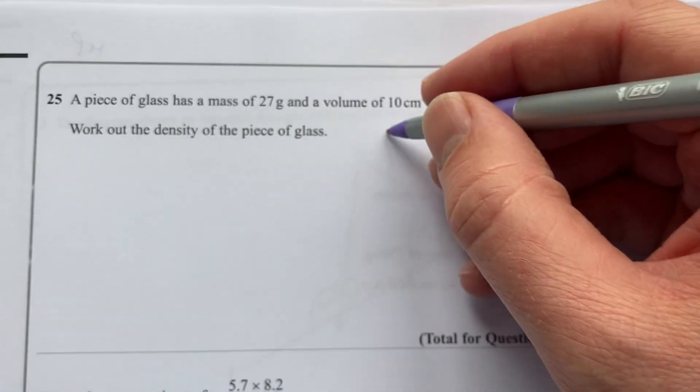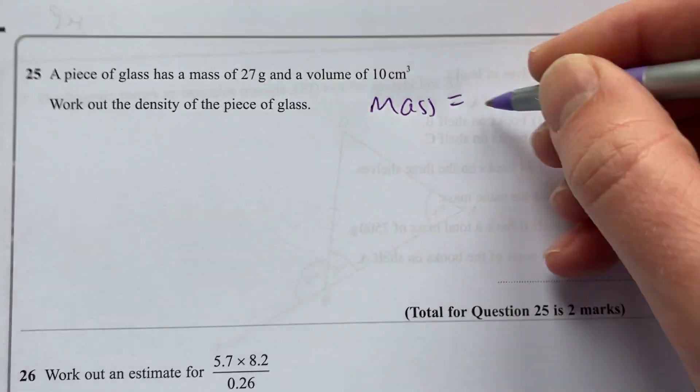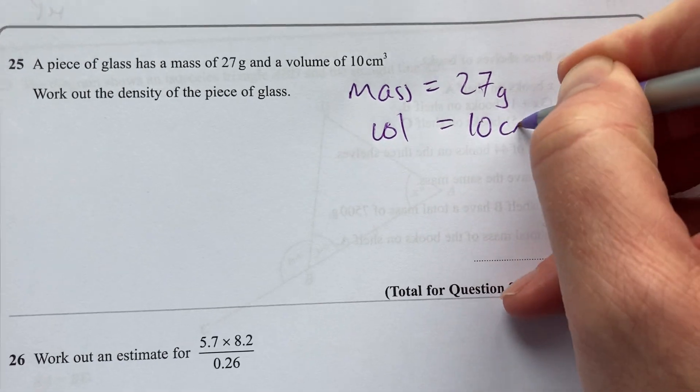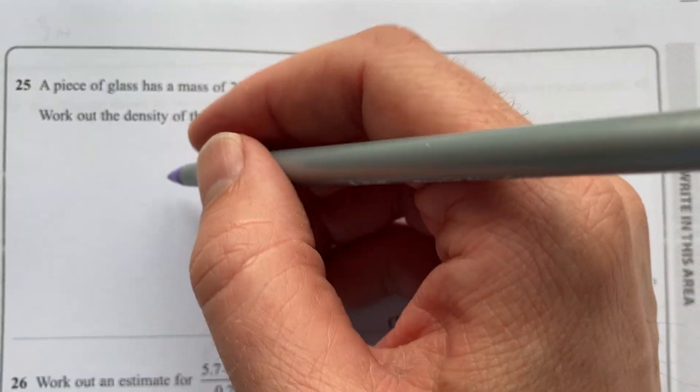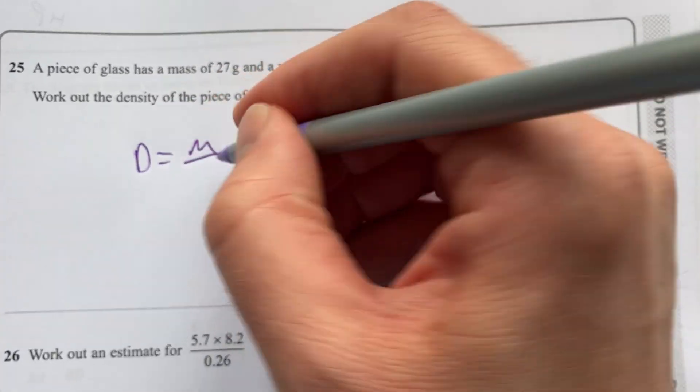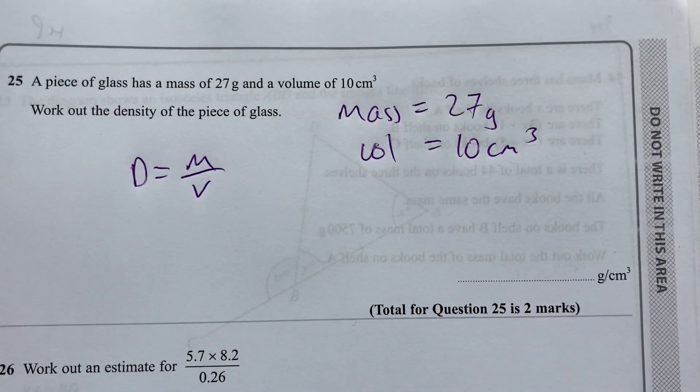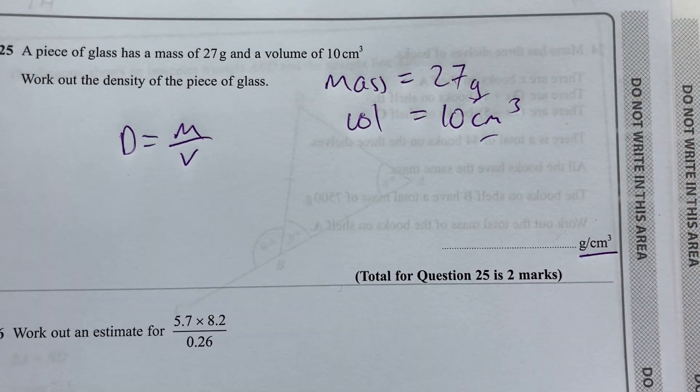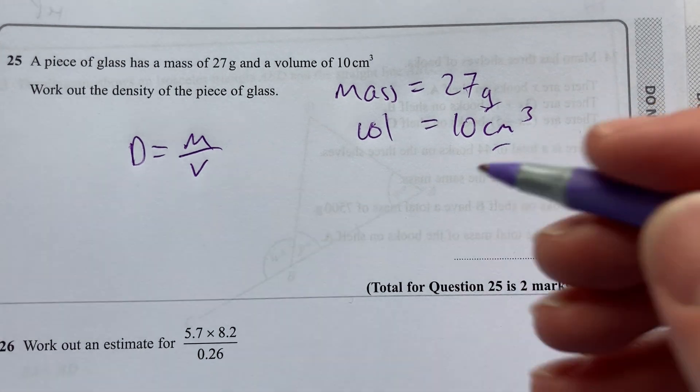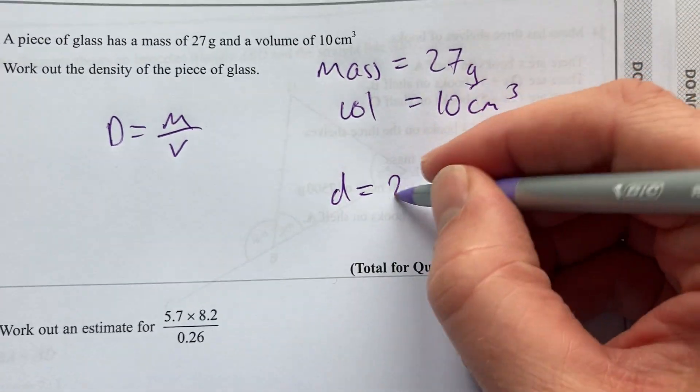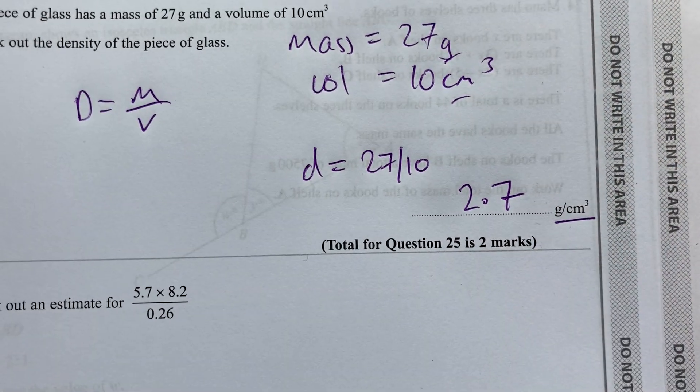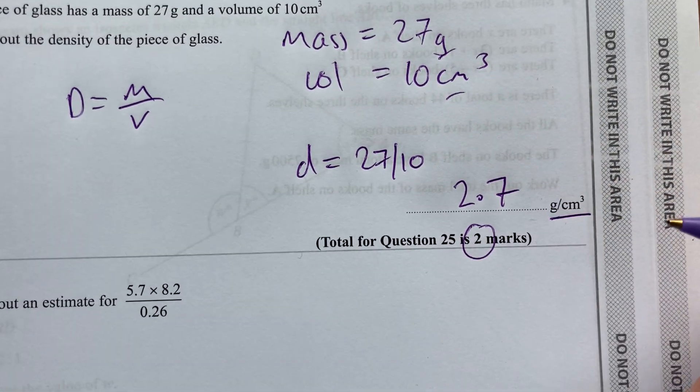A piece of glass has a mass of 27 grams and a volume of 10 cubic centimeters. You want to work out the density. And if you remember the triangles, well, density is mass over volume. They've given us in the units that they want it. Sometimes you have to do a conversion, but they've given us grams and cubic centimeters. So I simply need to say that density is 27 over 10, which is 2.7 grams per cubic centimeter. A nice two marks there.